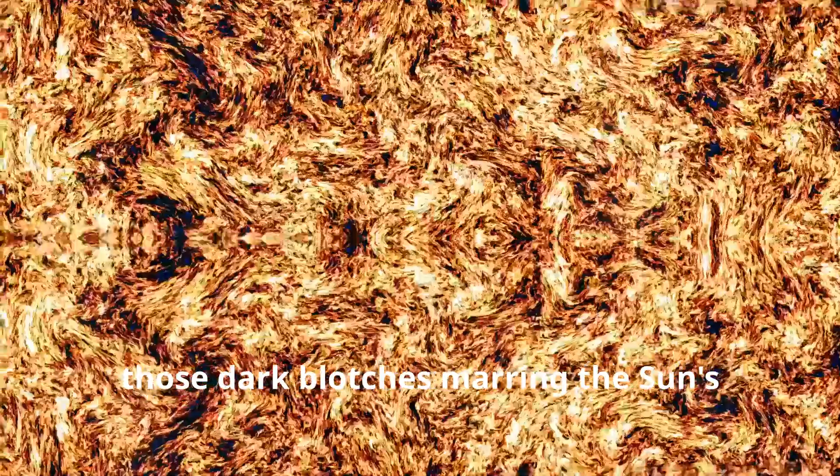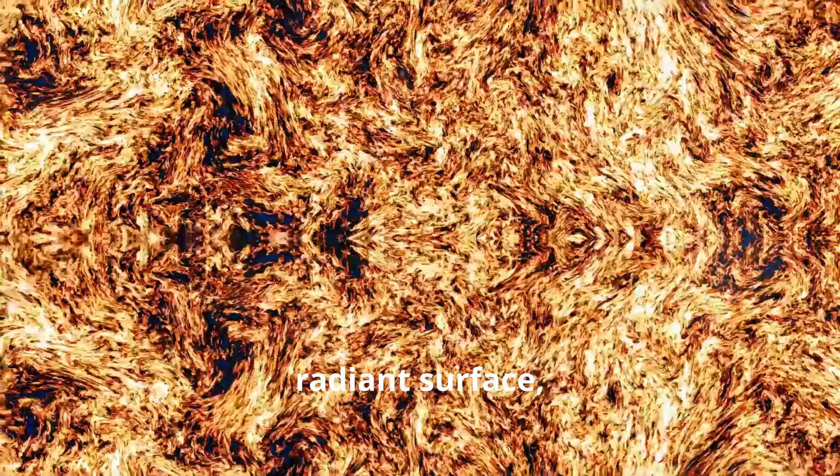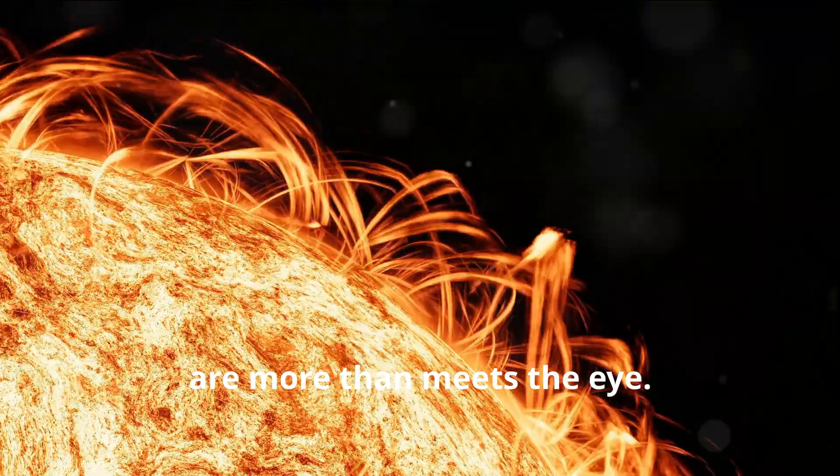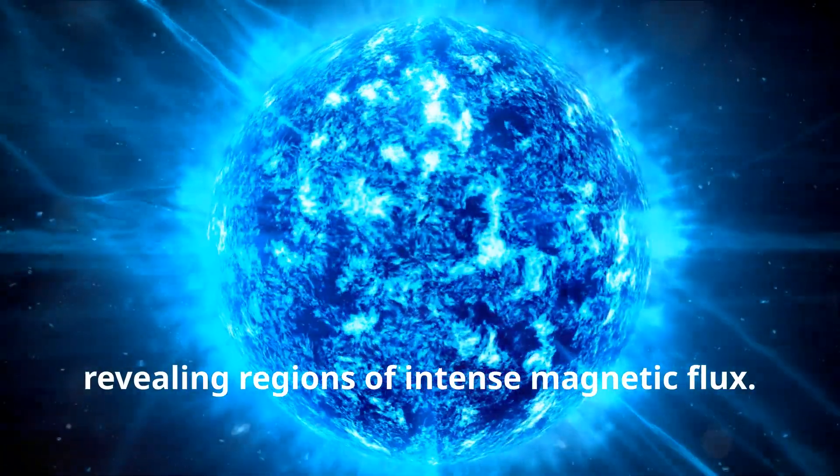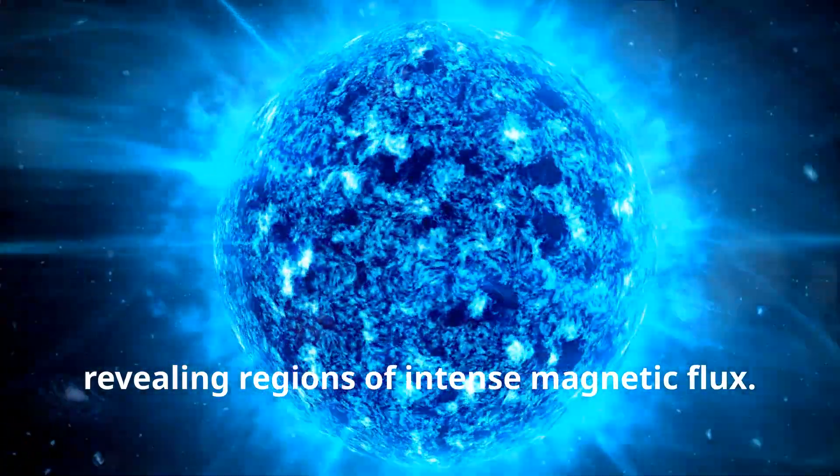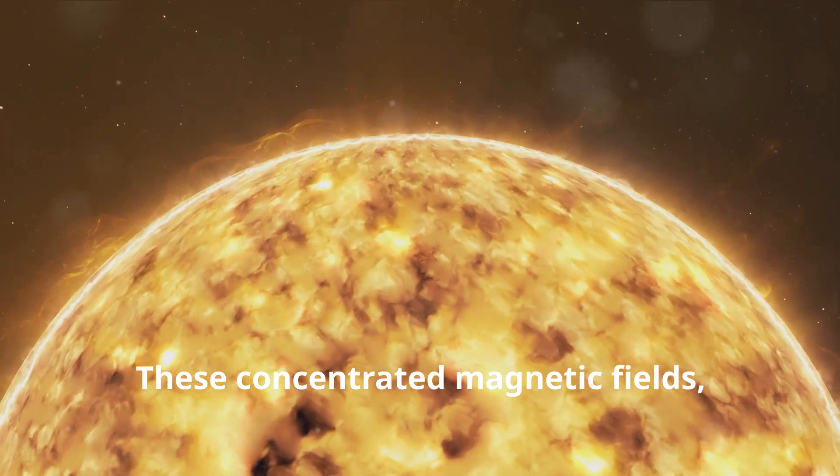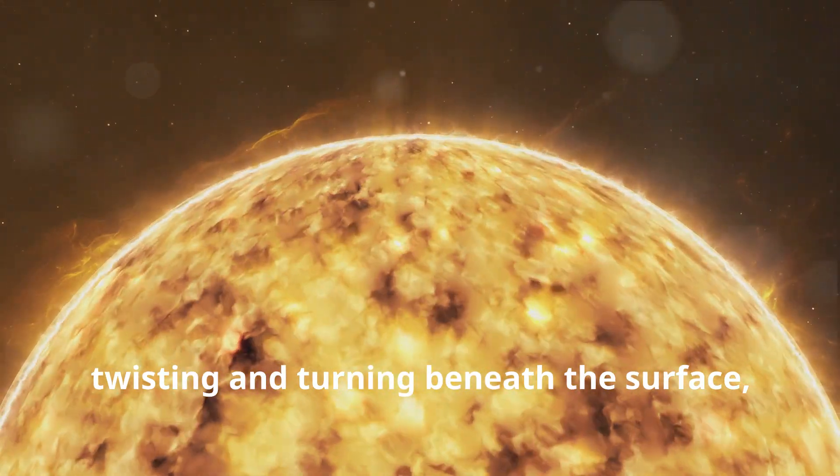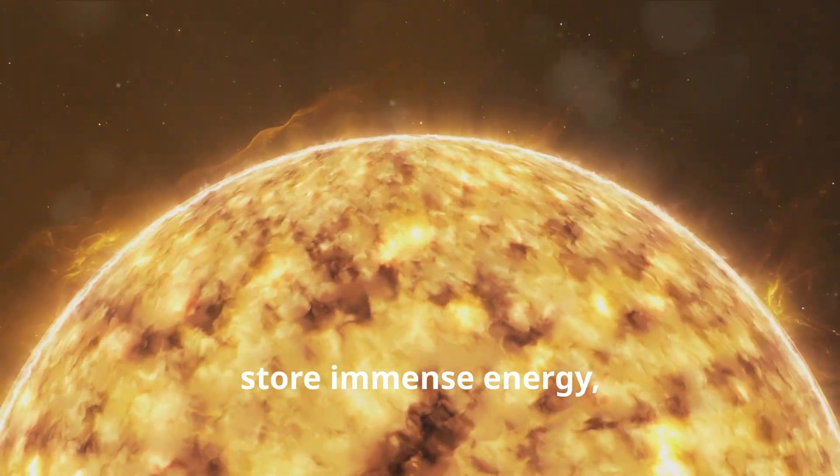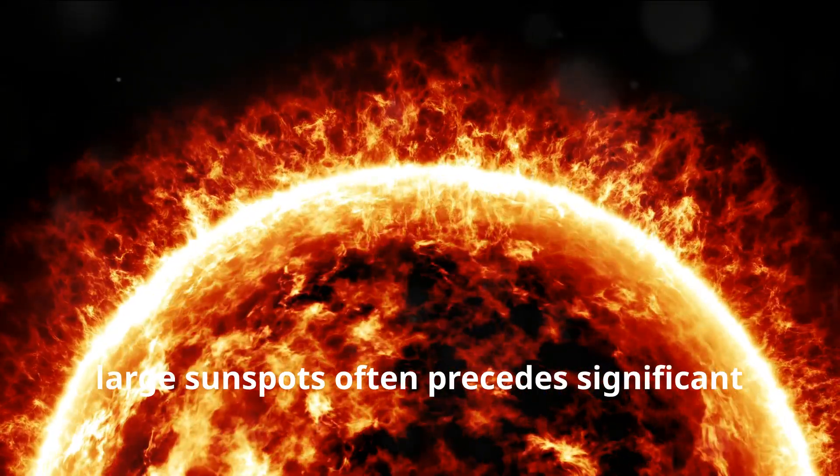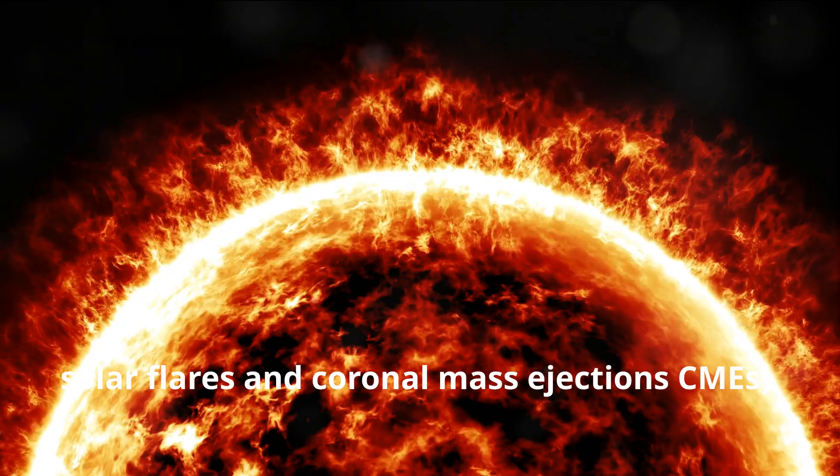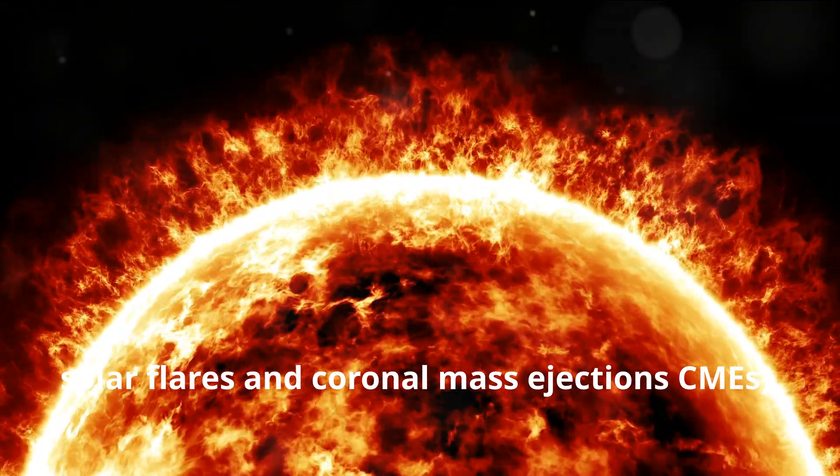Sunspots, those dark blotches marring the sun's radiant surface, are more than meets the eye. They are windows into the sun's intricate magnetic field, revealing regions of intense magnetic flux. These concentrated magnetic fields, twisting and turning beneath the surface, store immense energy poised to unleash solar storms. The appearance of numerous large sunspots often precede significant solar flares and coronal mass ejections, CMEs.